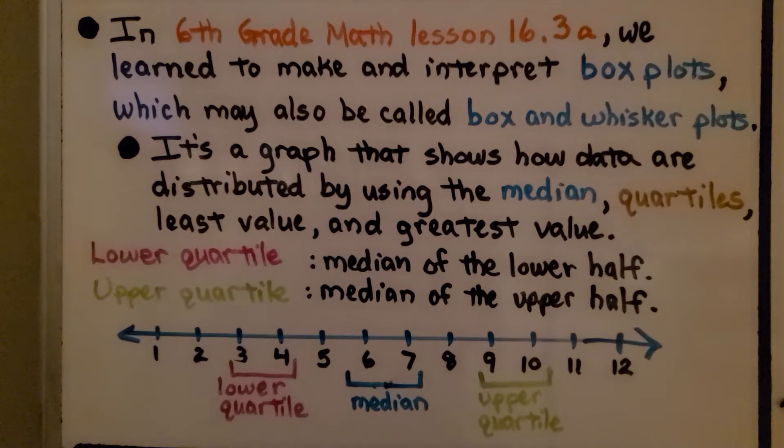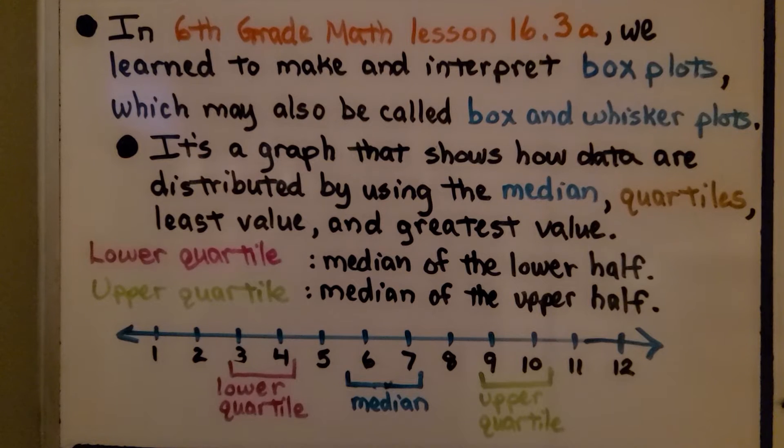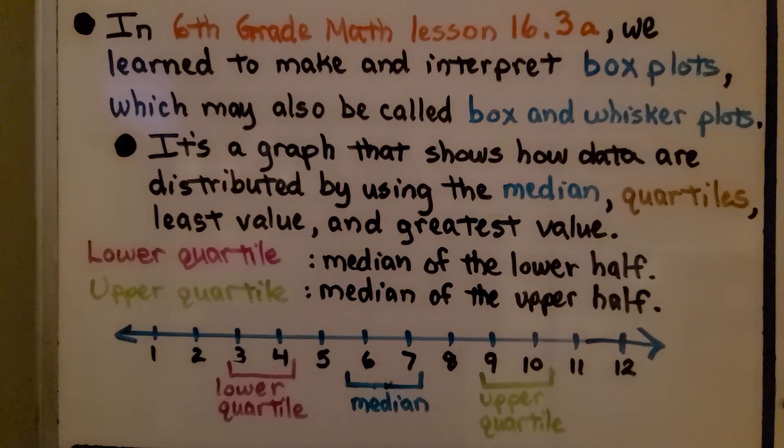In 6th grade math lesson 16.3a, we learned to make and interpret box plots, which may also be called box and whisker plots. It's a graph that shows how data are distributed by using the median, quartiles, least value, and greatest value.